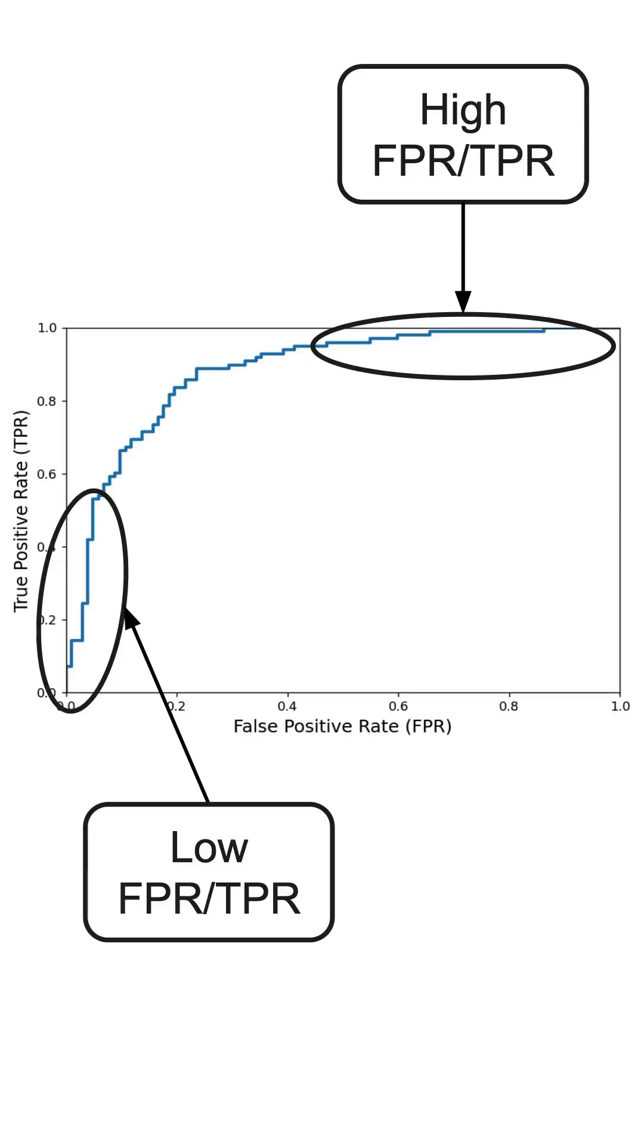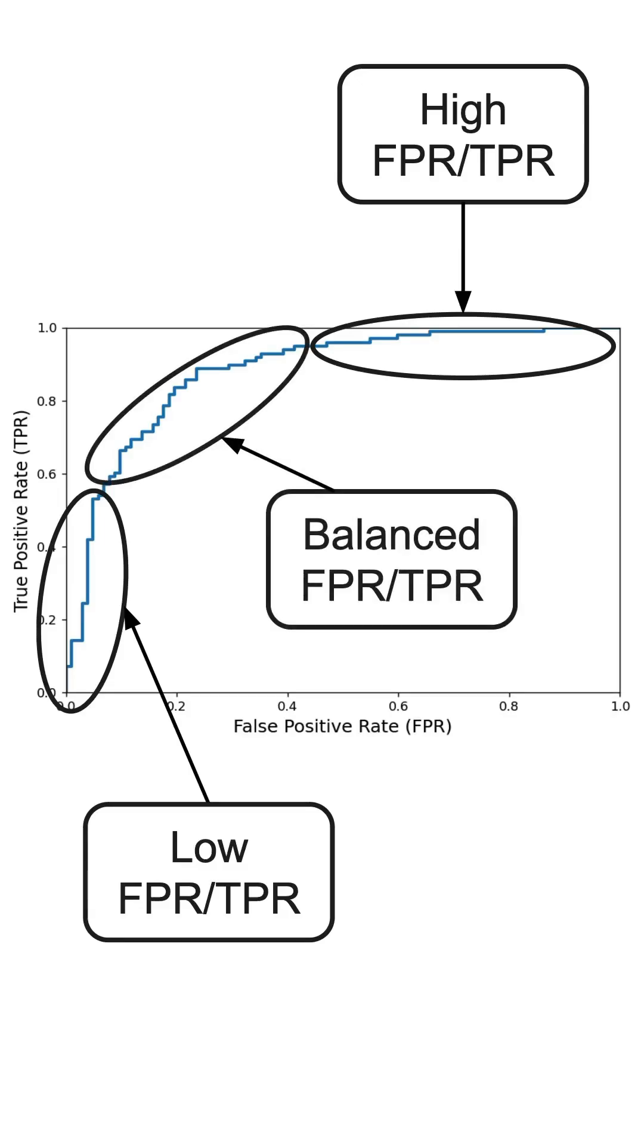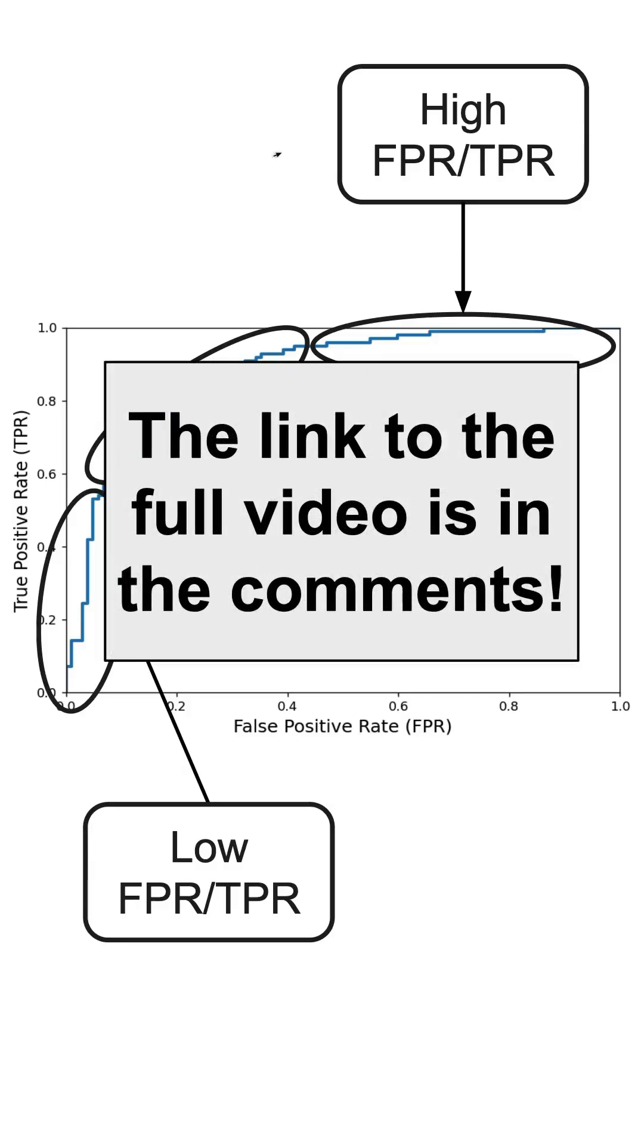Finally, if we just want a balance between the two, we select the threshold in this area. Still not clear enough? Check out the video where I explain the threshold selection in much more detail.